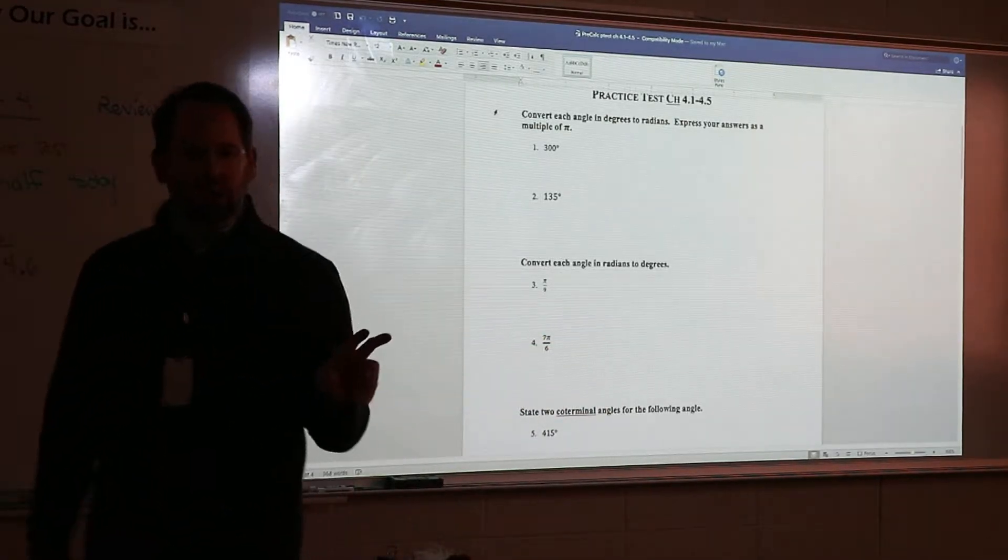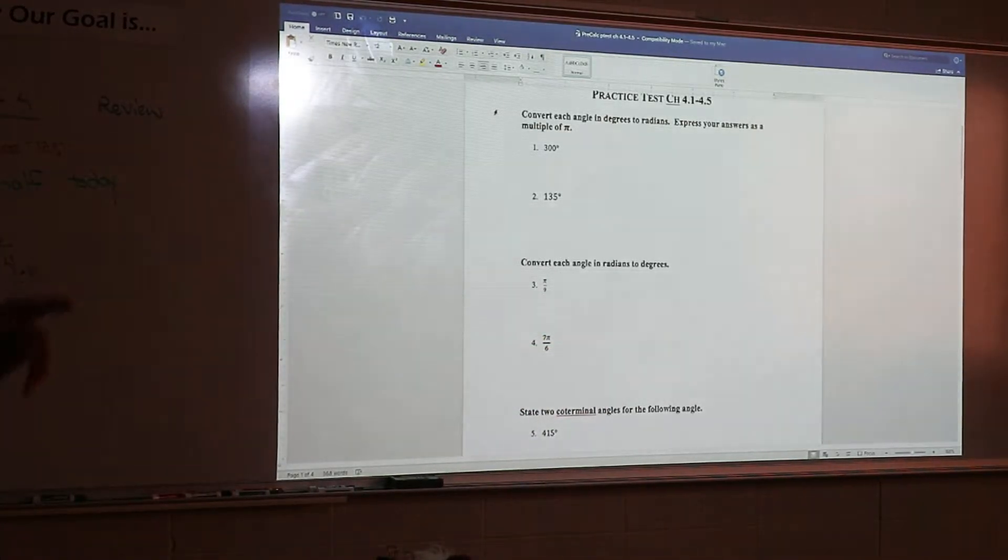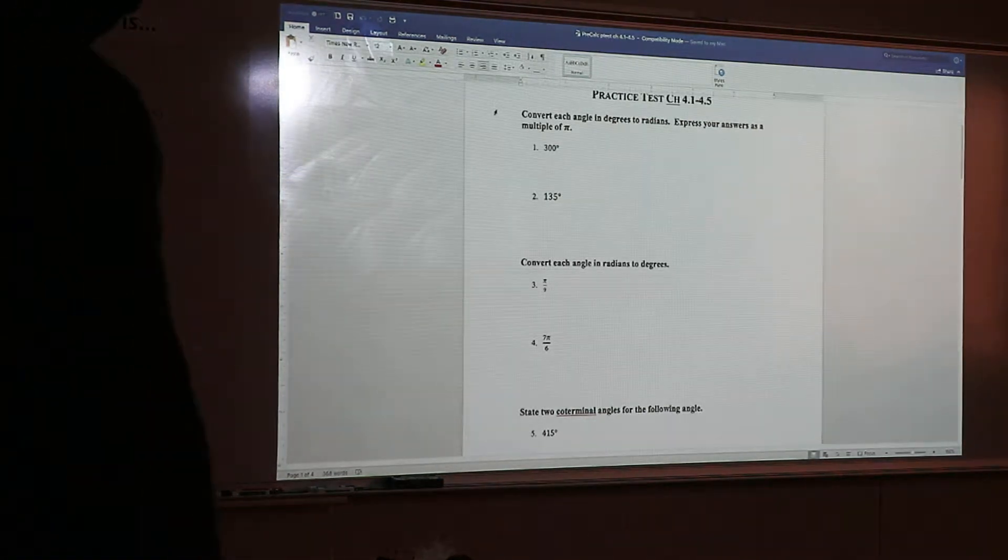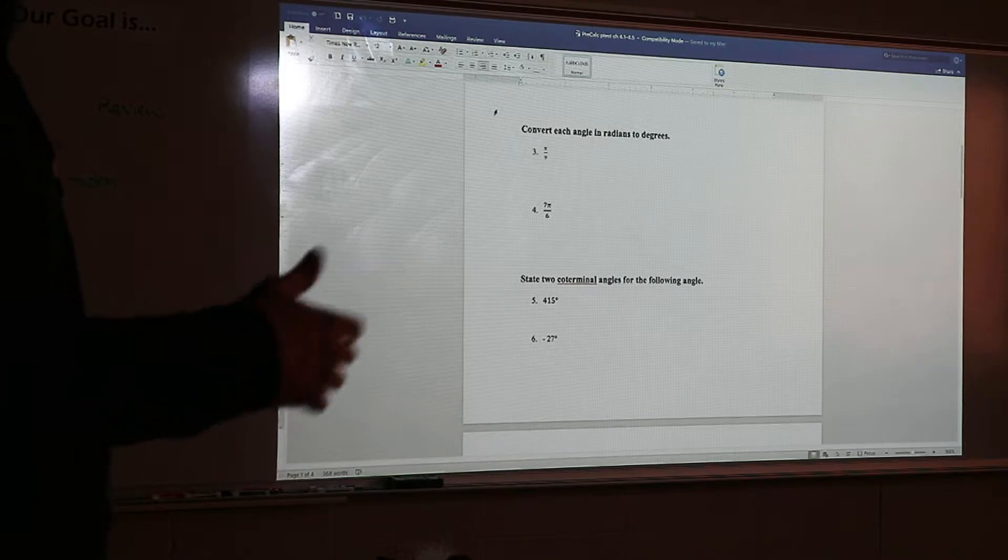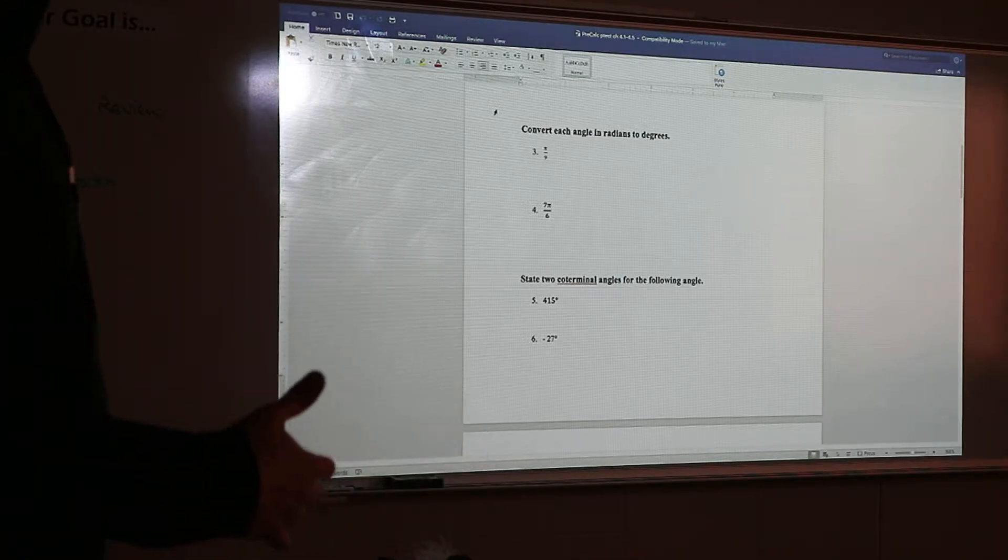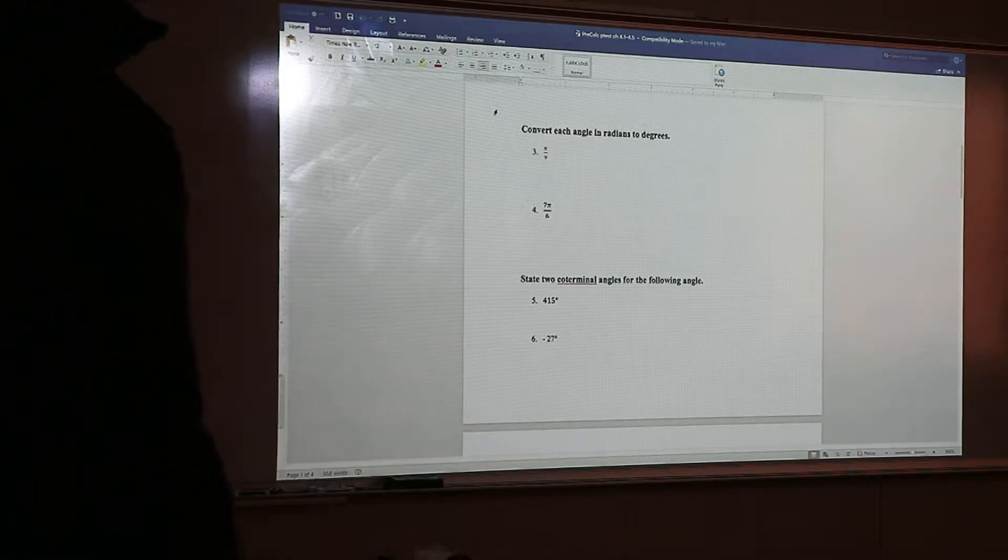These require decimals because you're going back to degrees. The ones at the bottom, you're asking for coterminal. Remember, on that bottom question, that's five and six, you have to give me two of them, two coterminals. That's where you add 360 or subtract 360. You can do it as many times as you want, either adding or subtracting, but I usually go one or the other.